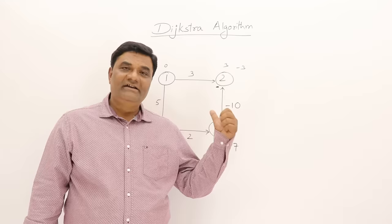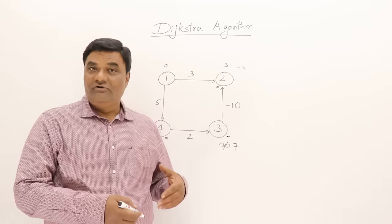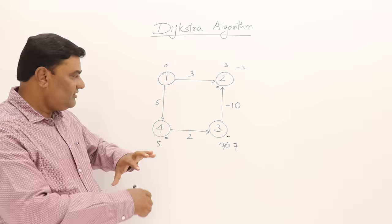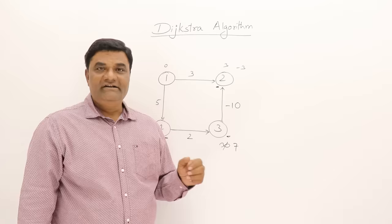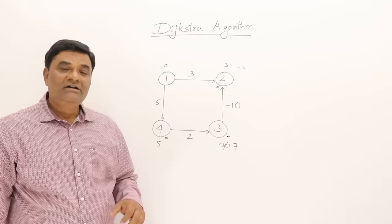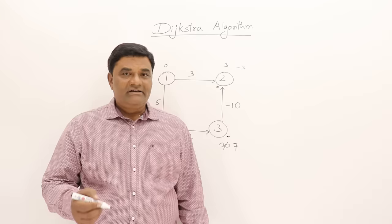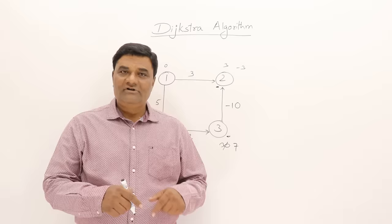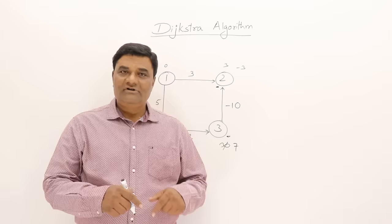That's all about the single source shortest path problem. The approach was greedy — but the greedy approach has failed here when there are negative edges, because it is not trying all possibilities. There is another solution for this single source shortest path problem: that is Bellman-Ford's algorithm, which we will see in dynamic programming. The next video will be on dynamic programming. These are the topics covered from greedy method — leave your comments so I can know how you are following the videos.